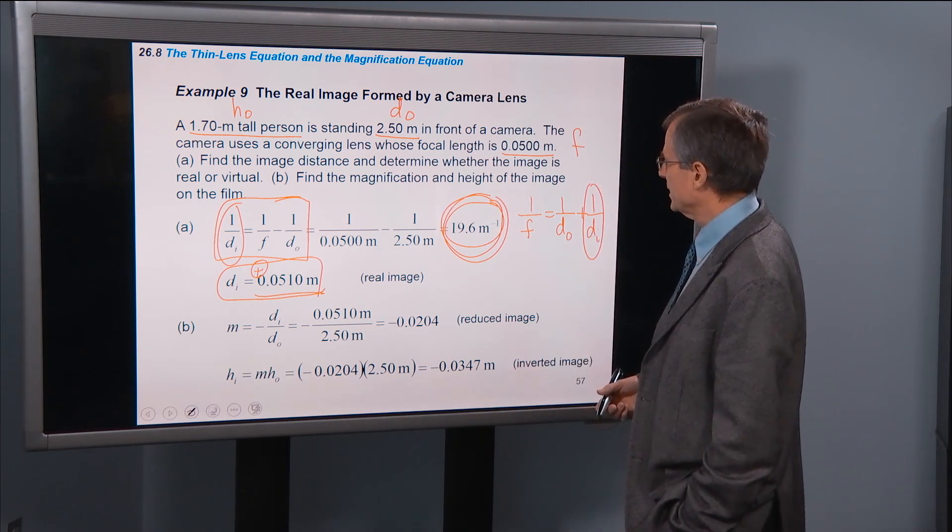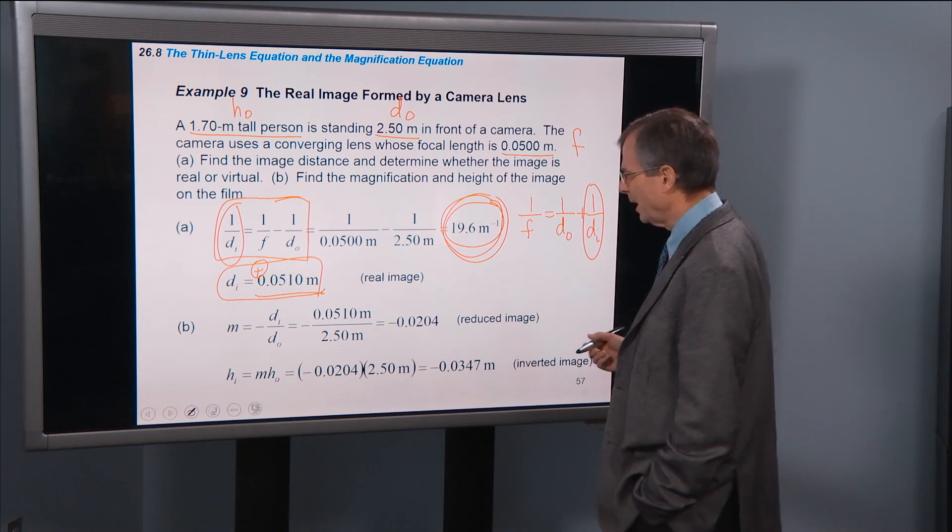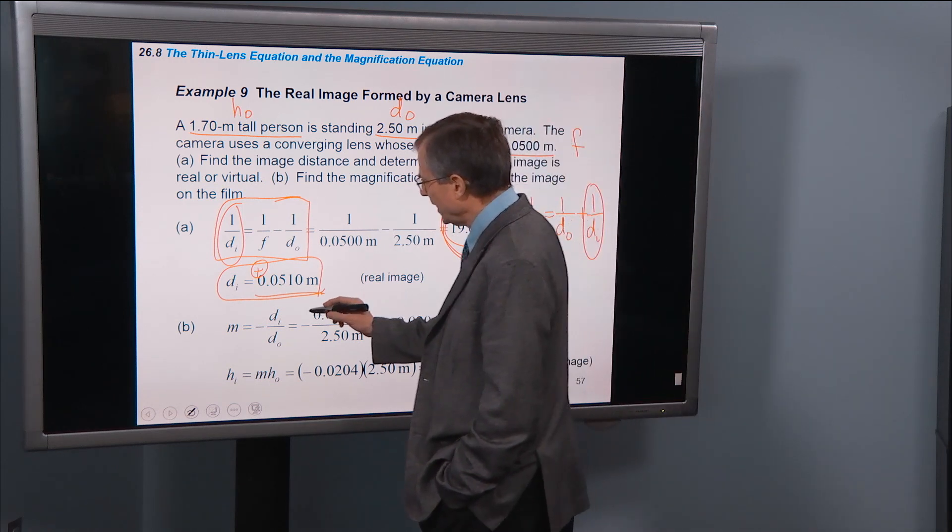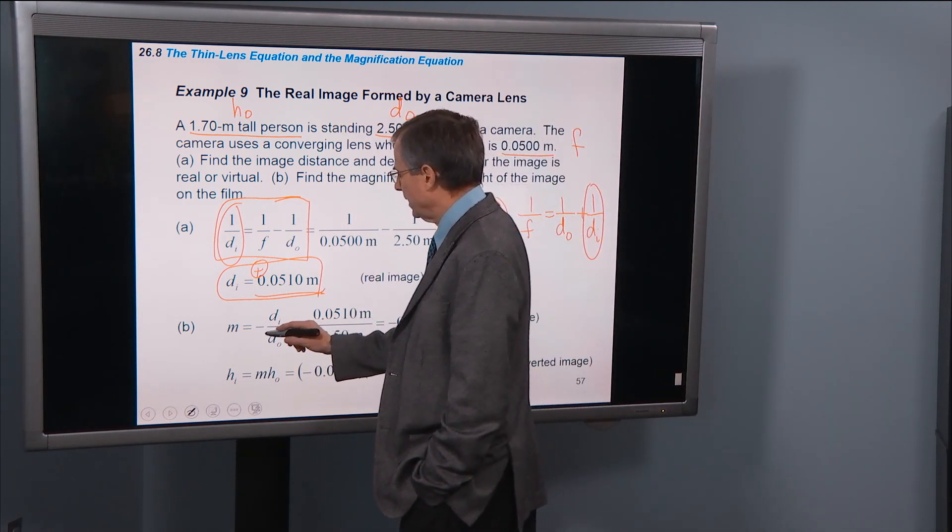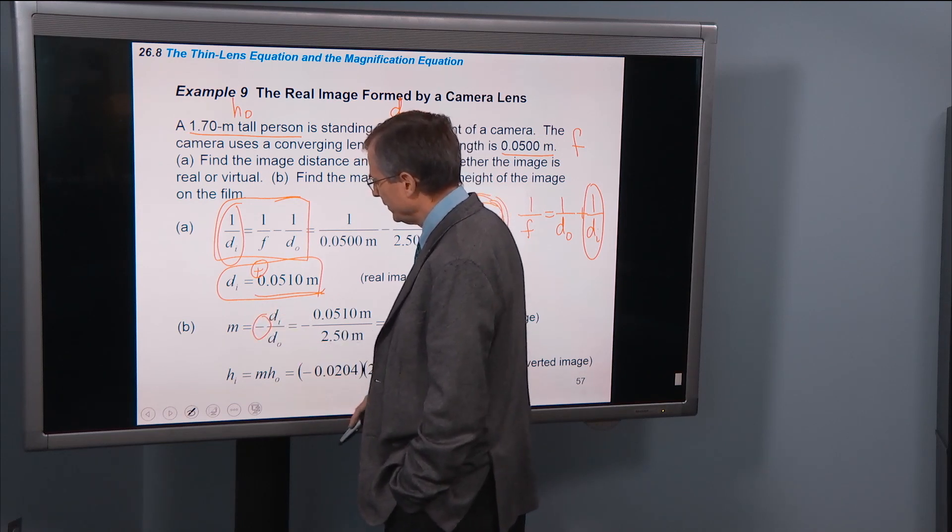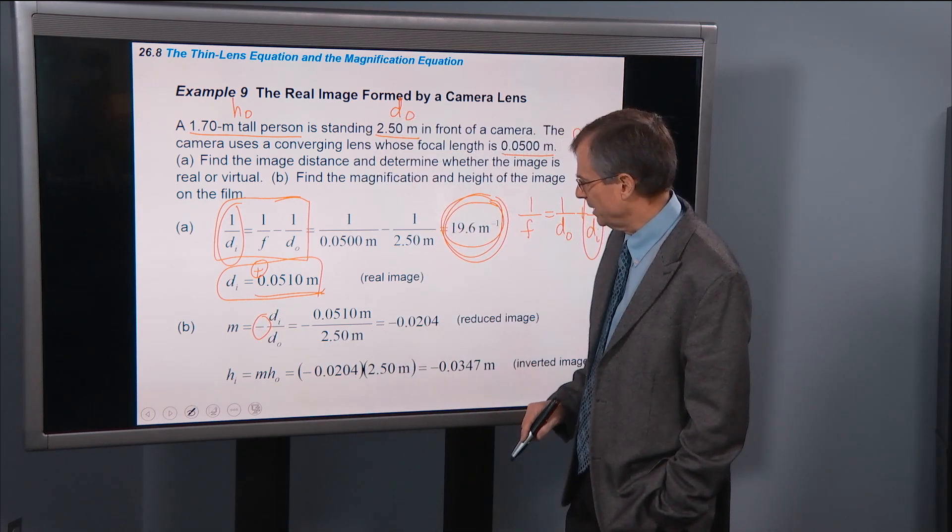Alright, so we're actually supposed to find the magnification as well. Well, we've got Di and D0, this is just the magnification equation, minus Di over D0,